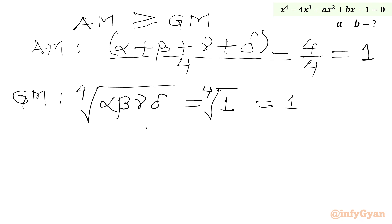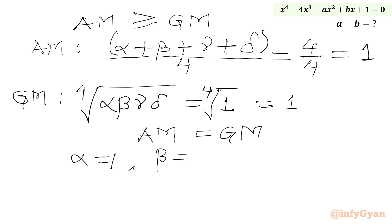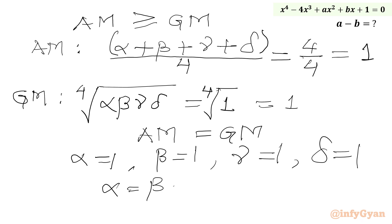Now we can conclude: because AM equals GM, we can write alpha equals 1, beta equals 1, gamma equals 1, and delta equals 1. In other words, alpha equals beta equals gamma equals delta equals 1.